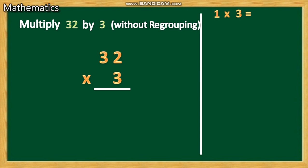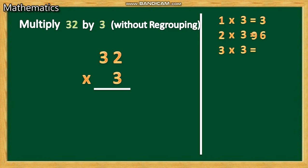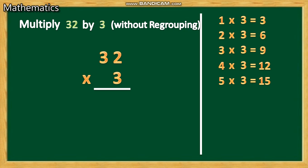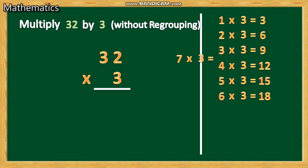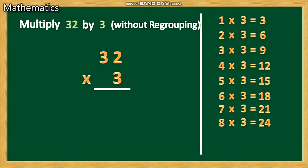1 three is 3, 2 threes are 6, 3 threes are 9, 4 threes are 12, 5 threes are 15, 6 threes are 18, 7 threes are 21, 8 threes are 24, 9 threes are 27, 10 threes are 30. Study this table!